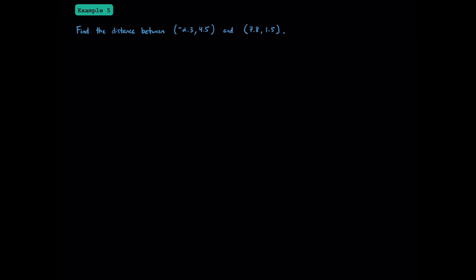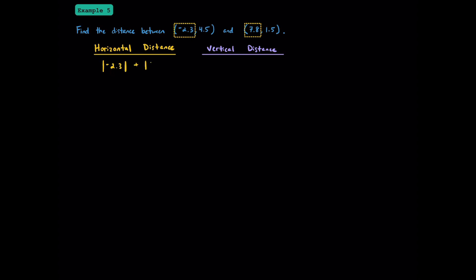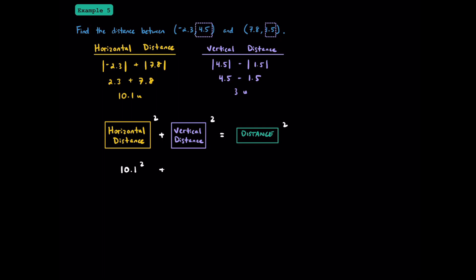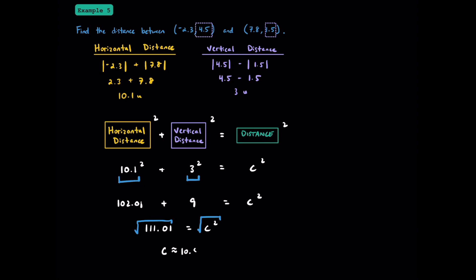Here's our last example. We're going to find the distance between negative 2.3 comma 4.5 and 7.8 comma 1.5. For horizontal distance, we add the absolute value of negative 2.3 and the absolute value of 7.8 — that's 2.3 plus 7.8, which is 10.1 units. For vertical distance, we subtract: the absolute value of 4.5 minus the absolute value of 1.5 gives us 4.5 minus 1.5, which is 3 units. Plugging in: 10.1 squared plus 3 squared equals C squared. 102.01 plus 9 is 111.01. The square root of 111.01 is approximately 10.54 units.